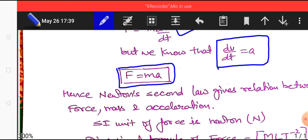So F equals ma or F equals dp by dt both define same law that is known as Newton's second law of motion. It gives us relation between force, mass, and acceleration.